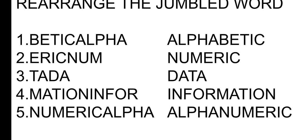Information is what we type — if a word or sentence has meaning, it becomes information. Meaningful typing becomes information. The fifth one: 'numeric alpha' — bring 'alpha' to the front and it becomes 'alphanumeric.'